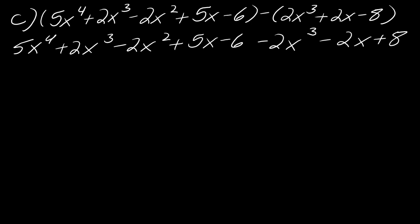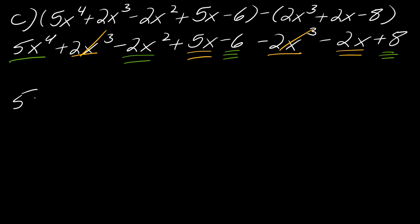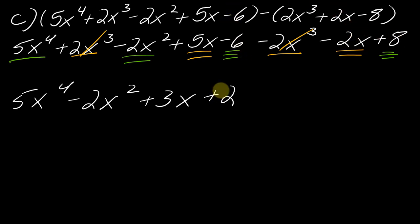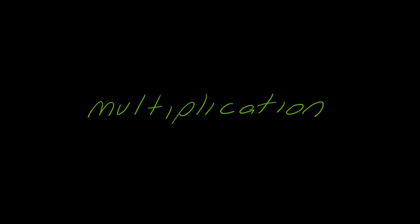Now I look for like terms. 4x squared does not have another like term, so that stays. 2x cubed and 2x cubed drop out entirely. 2x squared has no other like term. 5x and 2x go together. And then I have 6 and 8 as constants. So I'm left with 5x to the fourth minus 2x squared, the 2x cubed dropped out, 5x plus 2x is 3x, and negative 6 plus 8 is positive 2. So that is addition and subtraction.